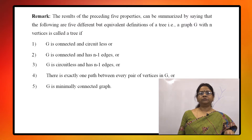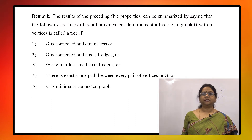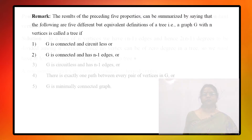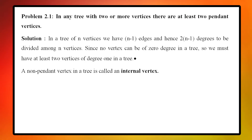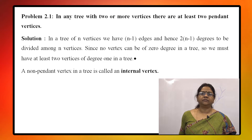If any of these 5 properties hold, then a graph G will be a tree. Now we discuss a problem: to prove that in any tree with 2 or more vertices, there are at least 2 pendant vertices.